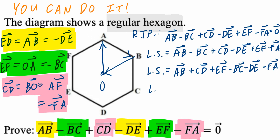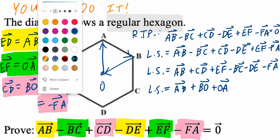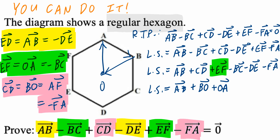Starting with the first group: vector AB stays as is. Vector CD is the same as vector BO — they are equal vectors, same magnitude, same direction. Vector EF is the same as vector OA. EF goes from here to here; OA goes from here to here — equal vectors, same direction and same magnitude.